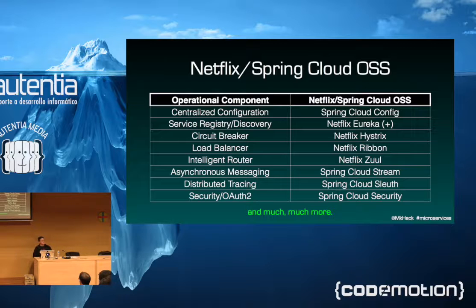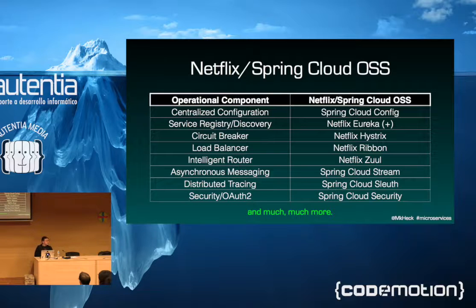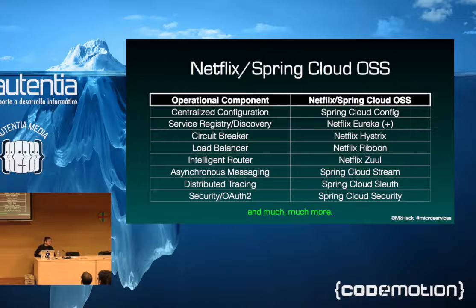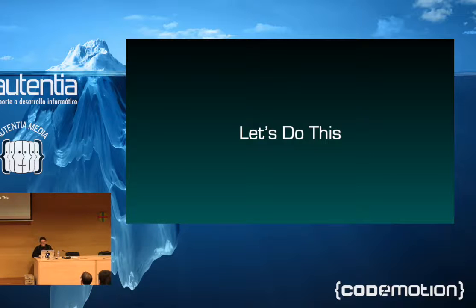Ribbon provides client-side load balancing so you're not inserting a new bottleneck into the process. Netflix Zuul — if you're familiar with Ghostbusters — allows you to do intelligent routing and externalize that from your applications, so you're not rebuilding any time a backing service location changes. Spring Cloud Stream handles asynchronous messaging for times you don't want to block waiting for a response. Distributed tracing is also a key element in microservices — you need to be able to establish a baseline for how long a chain of calls across multiple microservices should take and detect when it falls outside that. Security is a key element as well.